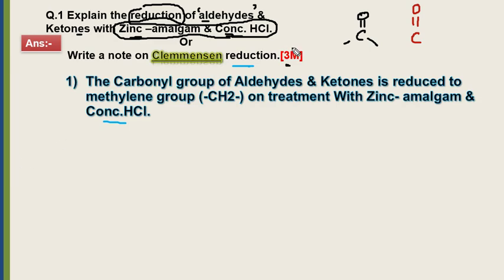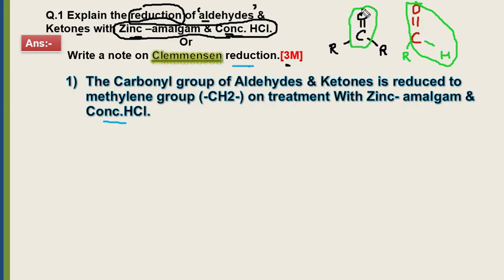Agar carbonyl group ke carbon ko main do R groups attach kar dun, it will become a ketone. Aur agar carbonyl carbon ko ek R aur ek H attach kar dun, so it will become a CHO group — yaani aldehyde group. Baccho, C double bond O yaani carbonyl group ko humne convert kar diya methylene group mein, by using zinc amalgam and concentrated HCl.